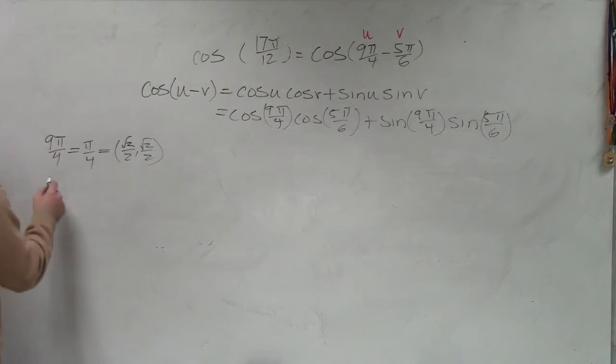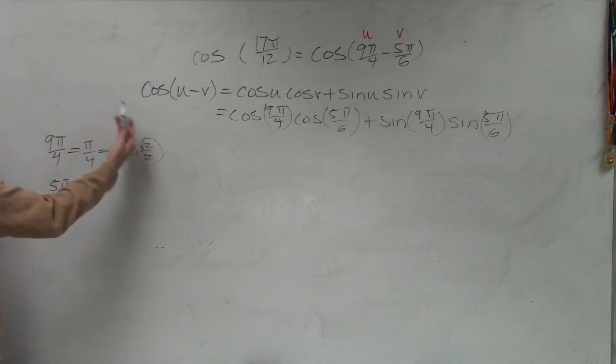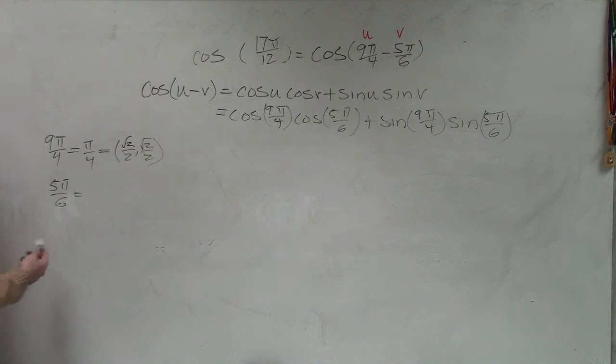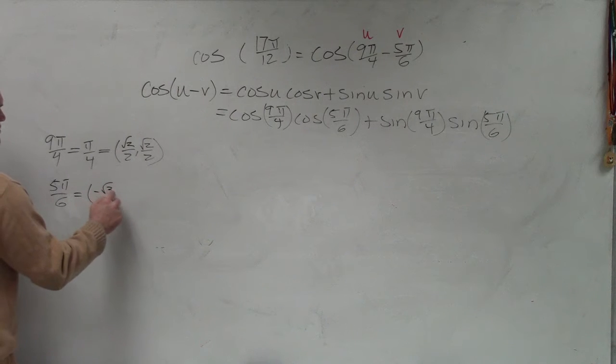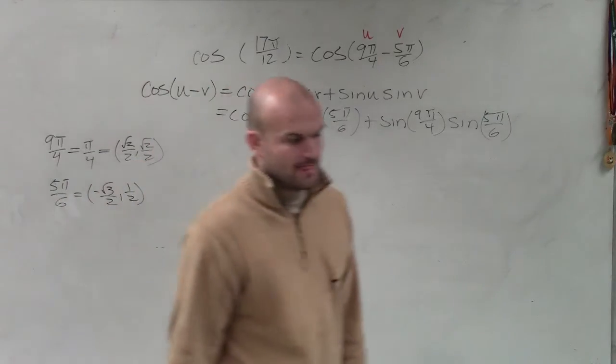And then also, we looked at 5π over 6. And looking at 5π over 6, we are understanding that that is the reflection of π over 6, but it's in the second quadrant. So that coordinate point was negative square root of 3 over 2, comma, 1 half. And we're good with that as well, right? OK.